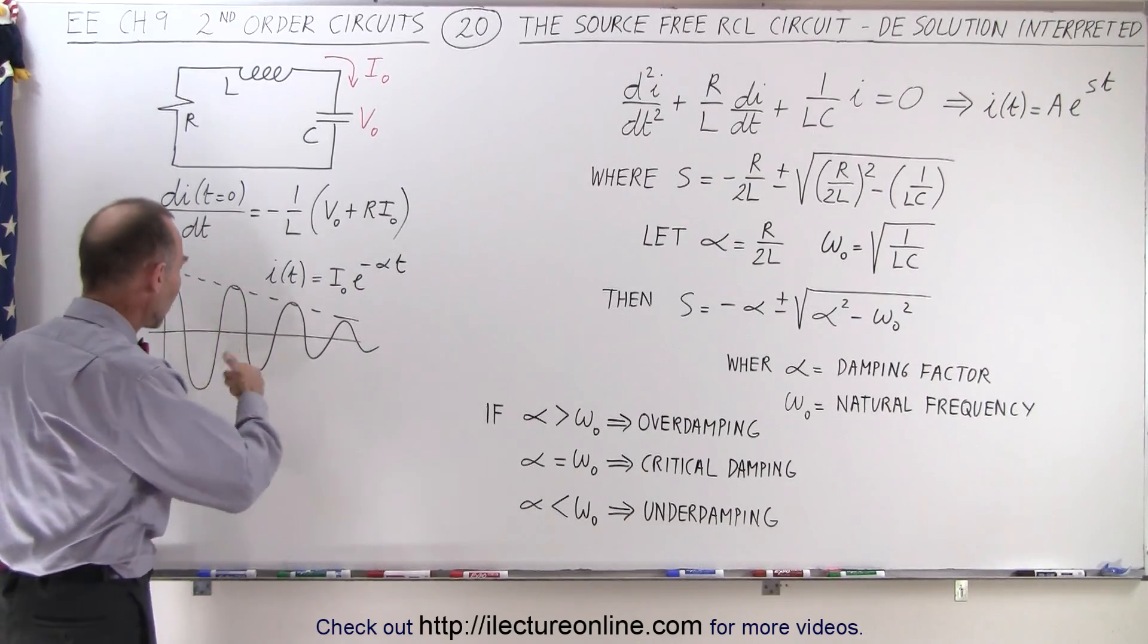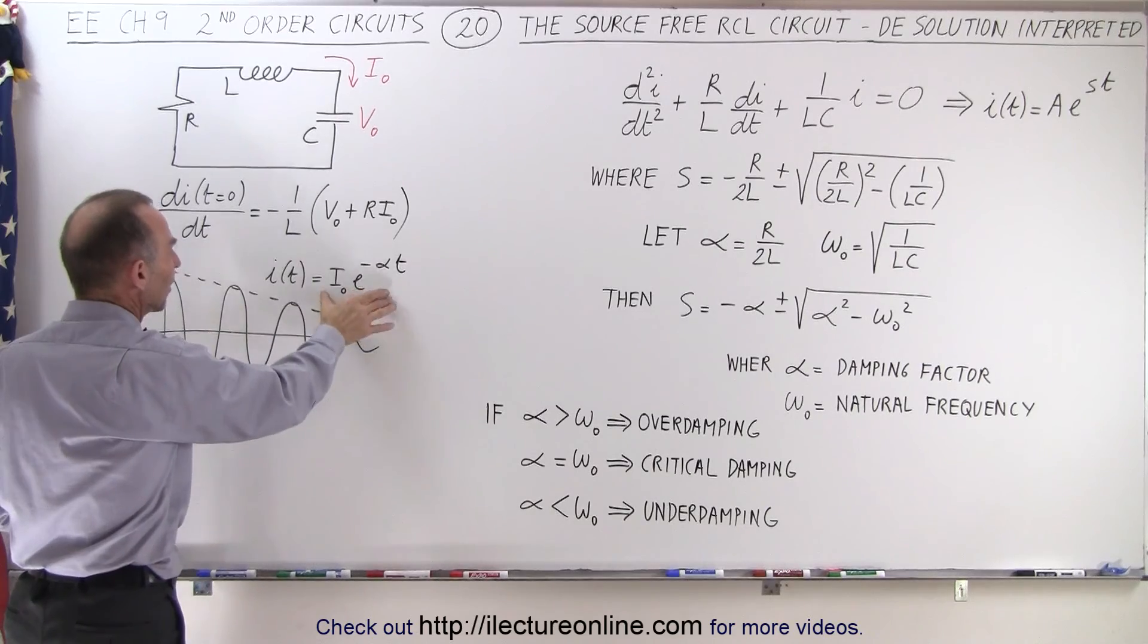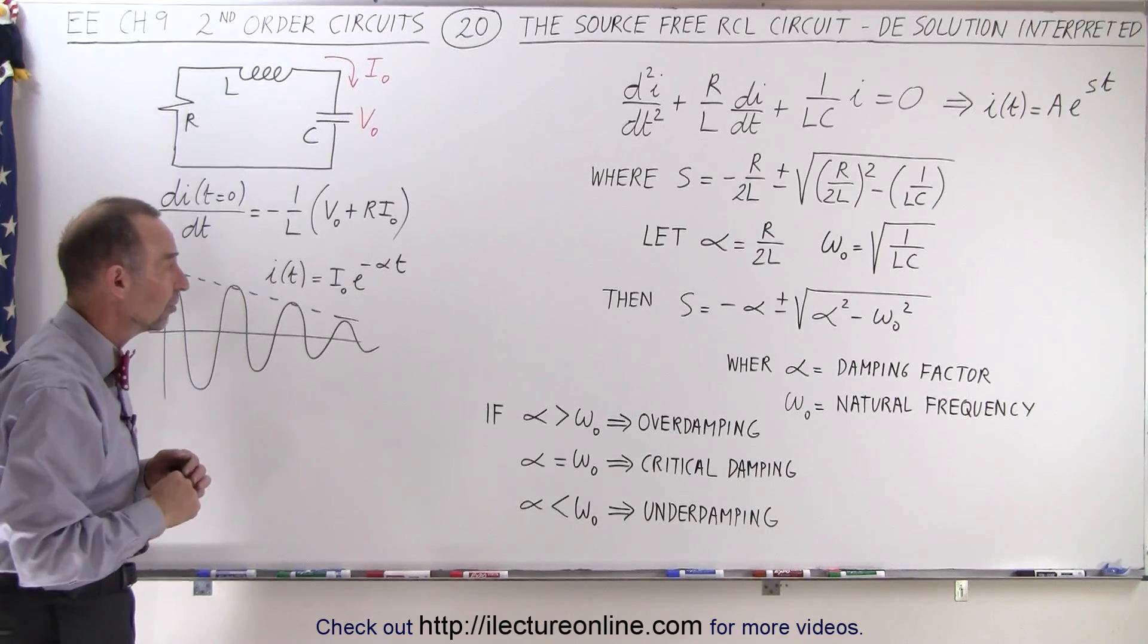We assume that we're going to have a situation right here where the current would oscillate but diminish over time because we had a damping factor caused by the resistance and the interaction between the resistance and the inductor.